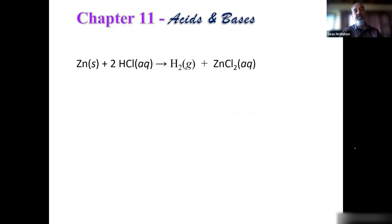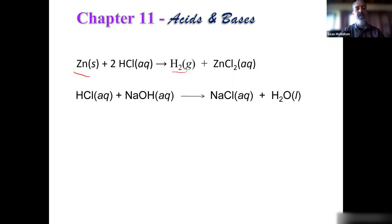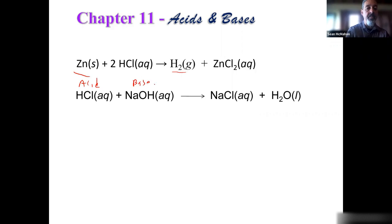Just as a review, here's an example where we have a metal added to an acid to produce hydrogen gas and a metal chloride. This is a single displacement reaction, and we've actually performed this in our labs. We also talked about neutralization reactions — double displacements — where we have an acid and a base, and through double displacement, we produce a salt and water.